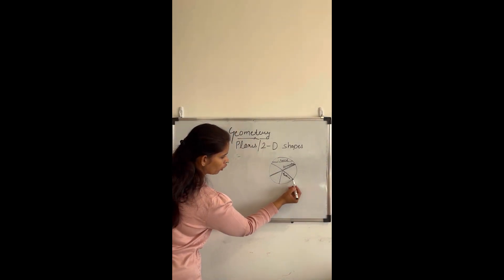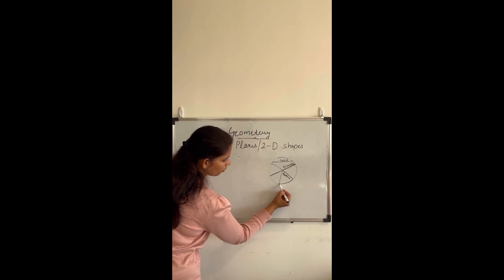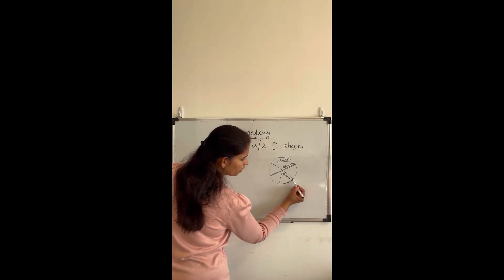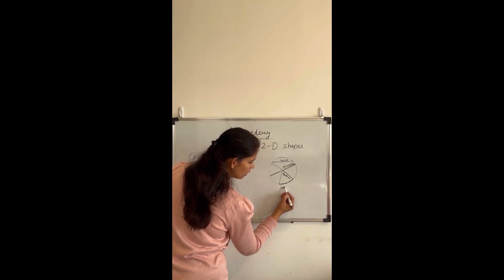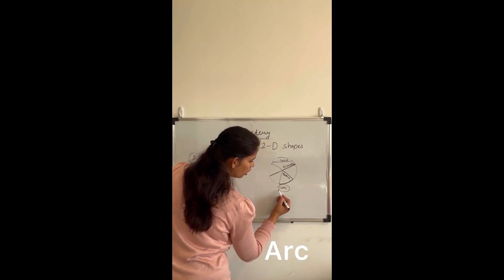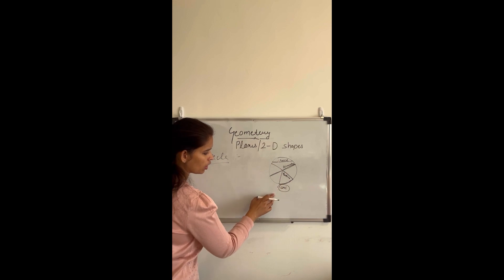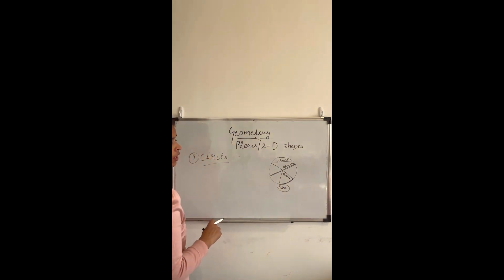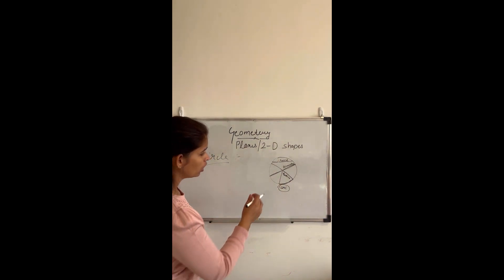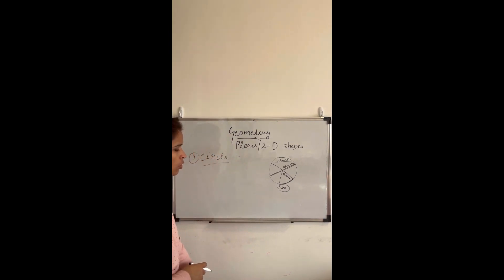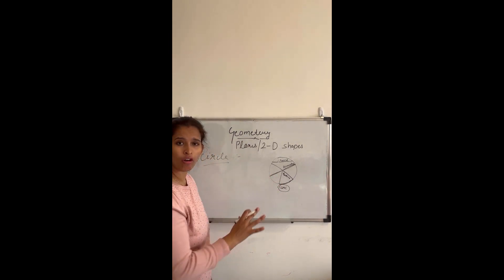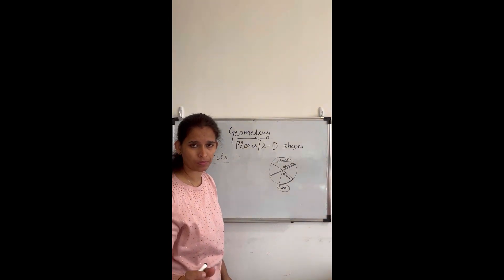If I draw a line from one boundary point to another but it does not cross the center, that line is called a chord. Also, if I draw a line from one point to another on the boundary, that curved part is called an arc. These terms will be useful later for finding other measurements related to circles.